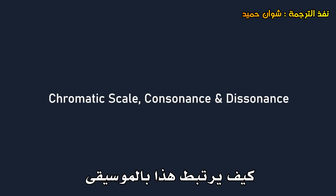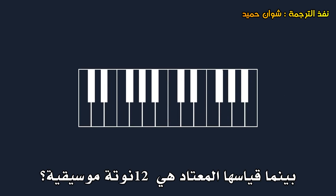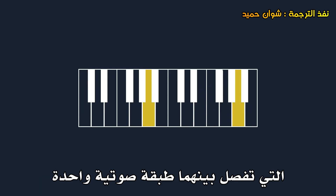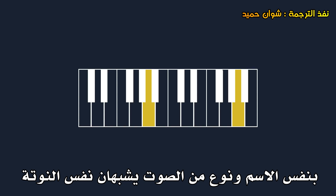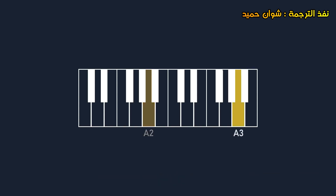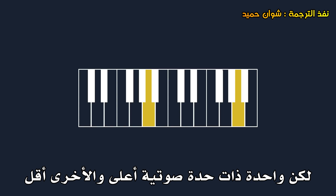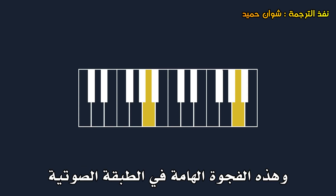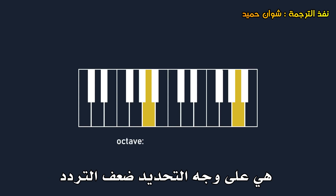How does this tie into music and its familiar 12-note scale? Two notes that are one octave apart are named the same, and kind of sound like they are the same note, but one is higher pitch and one is lower. This important gap of the octave is precisely a double in frequency.